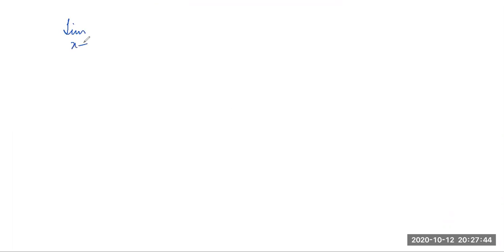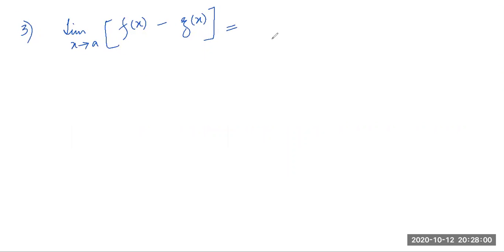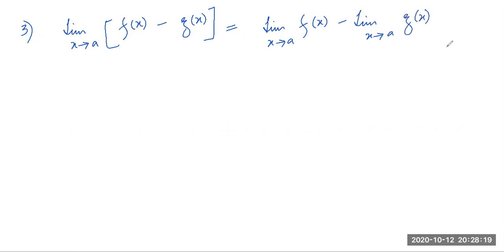Now we go for the next law. If we have two functions f(x) minus g(x), then: limit as x approaches a of [f(x) − g(x)] = limit as x approaches a of f(x) minus limit as x approaches a of g(x).